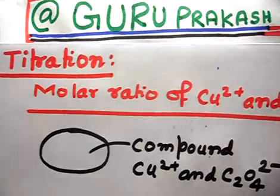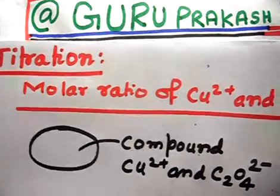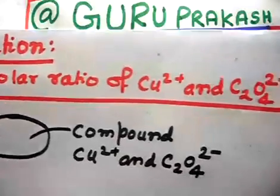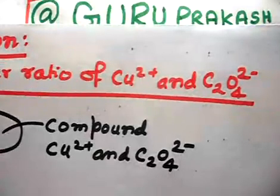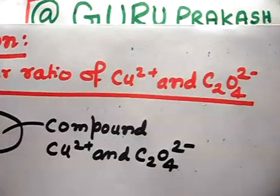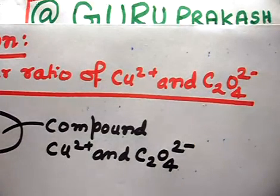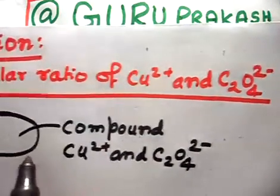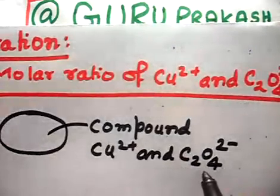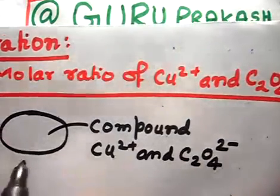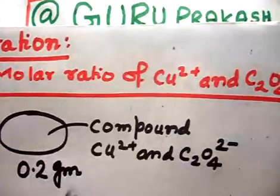Let us discuss this problem, which is related to finding the percentage or ratio of Cu²⁺ to C₂O₄²⁻. We have to find the molar ratio of Cu²⁺ and C₂O₄²⁻. This is a solution of 0.2 gram of a compound containing Cu²⁺ and C₂O₄²⁻, and the weight of the compound is 0.2 gram — that is given.